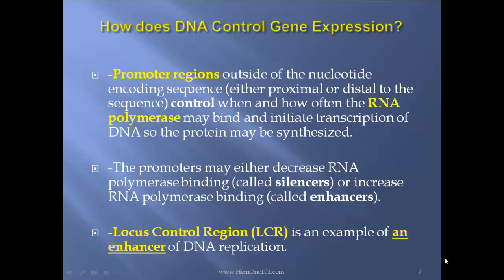How does DNA control gene expression? Promoter regions outside of the nucleotide encoding sequence, either proximal or distal to the sequence, control when and how often the RNA polymerase may bind and initiate transcription of DNA so that proteins may be synthesized. The promoters may either decrease RNA polymerase binding, called silencers, or increase RNA polymerase binding, called enhancers. Locus control region, LCR, is an example of an enhancer of DNA replication.